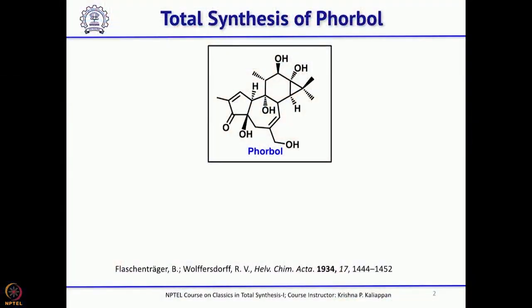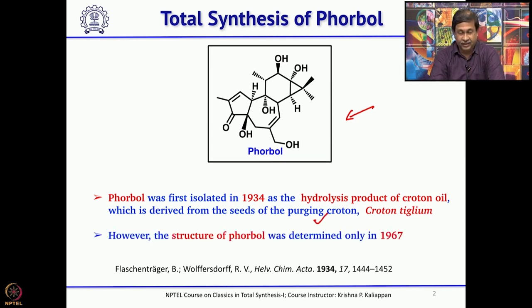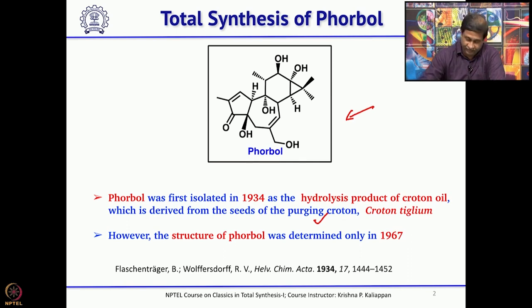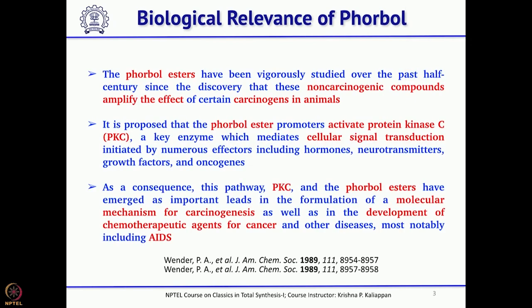Good morning and welcome back to the Classics in Total Synthesis lecture series. We have been discussing many total syntheses of complex natural products and will continue with one more: phorbol. As you can see, the structure is quite complex. It was isolated in 1934 from the seeds of purging cotton, and it took about another 43 years to determine the correct structure of phorbol.